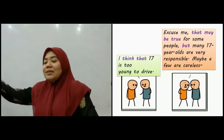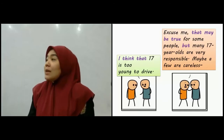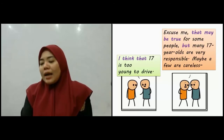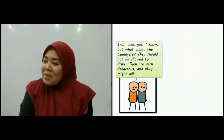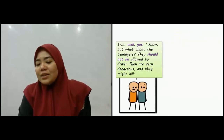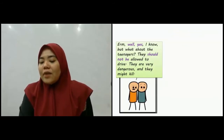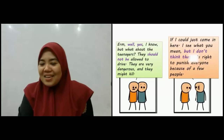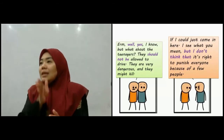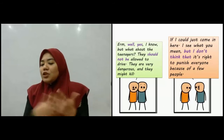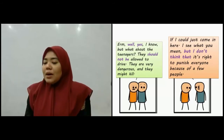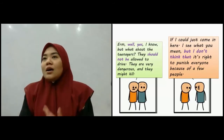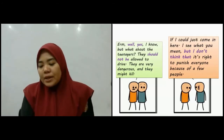Another person says: 'Excuse me, that may be true for some people, but many 70-year-olds are very responsible. Well, maybe a few are careless.' What about teenagers? 'They should not be allowed to drive — they are very dangerous and they might kill.' If I could just come in here — that means interrupting — 'I see what you mean, but I don't think it's right to punish everyone because of a few people's mistakes.'